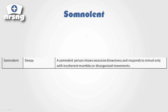From delirious, we go to somnolent. The biggest difference between somnolent and delirious is that they're sleepy — this is an excessive drowsiness. In order to get them to even respond, you have to provide stimuli. Even when they do respond, it might just be mumbles or disorganized movements — you pinch their trapezius or their quad and they'll just mumble. They're not going to say words; they're incredibly drowsy and may keep their eyes closed, and it may not be possible to even get them to open their eyes.